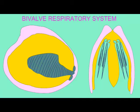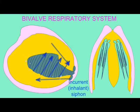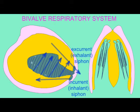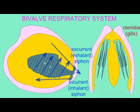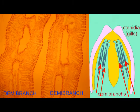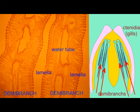Gills can be contained within the body cavity, but water must be continually pumped over these gills in order to perform sufficient levels of gas exchange. So in bivalves, the gills are located inside the shell, but a continuous stream of water coming in through the inhalant siphon and leaving through the exhalant siphon must be created.